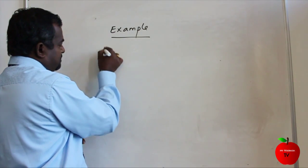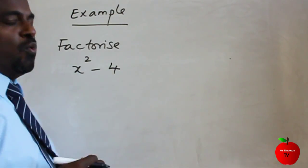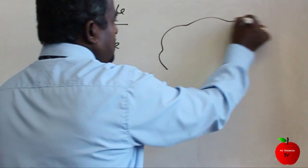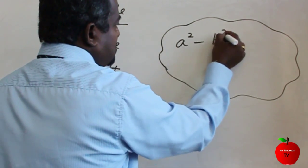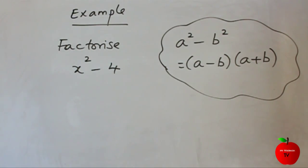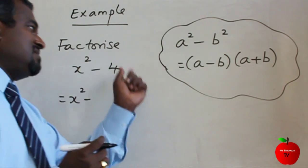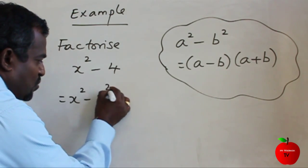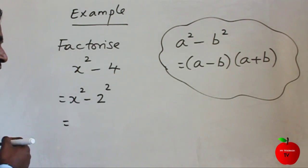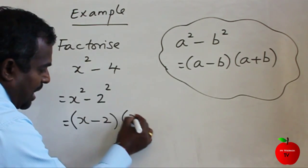Now if we factorise x squared minus 4. To factorise x squared minus 4, you have to remember: if we have a squared minus b squared, one factor is a minus b and the other is a plus b. Here, 4 can be written as 2 squared, so x squared minus 4 is x squared minus 2 squared — that's the a squared minus b squared form. So the answer is x minus 2 and x plus 2.